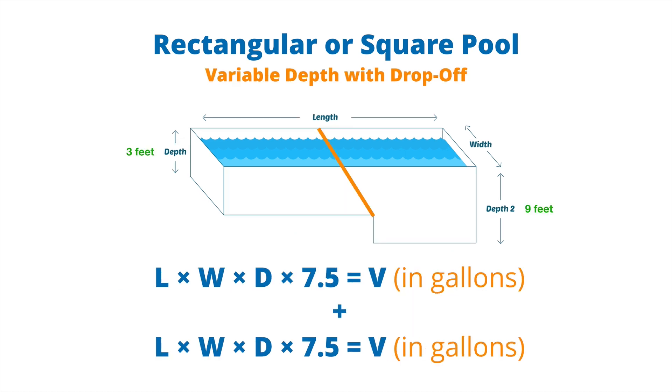Moving on to a rectangular or square pool with a variable depth with a very specific drop-off point. So this is not a sloping pool. What we can do here is treat this like two different pools. We take the smaller area, which is only the three feet of depth, and we measure that as one specific constant depth pool. Then we take the nine foot section and measure that as another constant depth square pool. We just do the same math as we did on the constant depth, and then we just add them together.